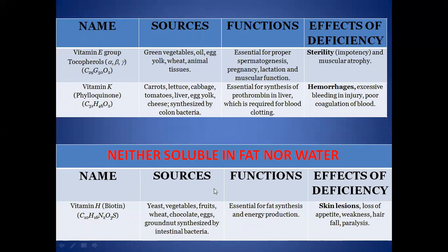Vitamin E is sourced from green vegetables, oil, egg yolk, wheat, and animal tissues. Its function is that it is essential for proper spermatogenesis, pregnancy, lactation, and muscular functions. The effects of its deficiency are sterility and muscular atrophy.